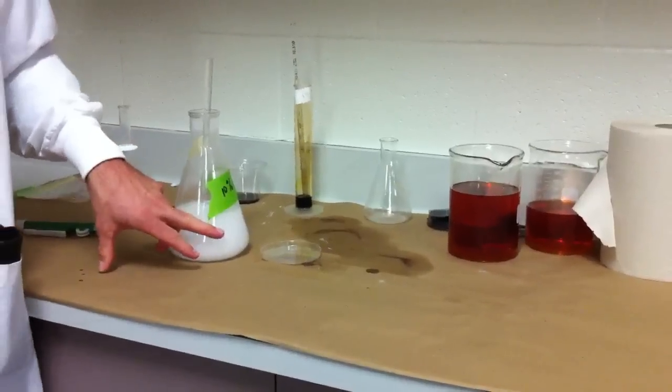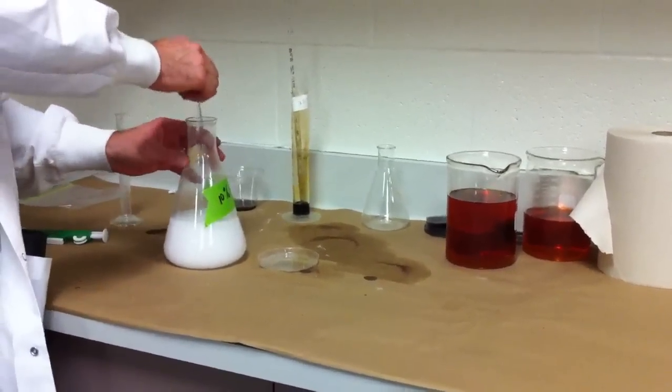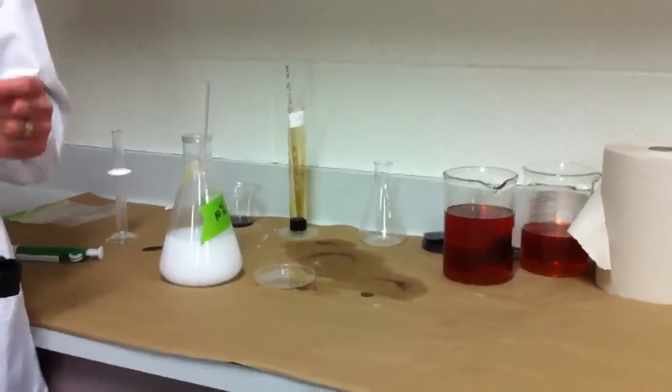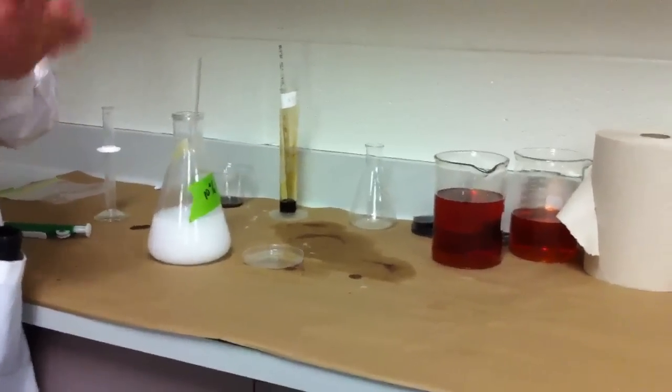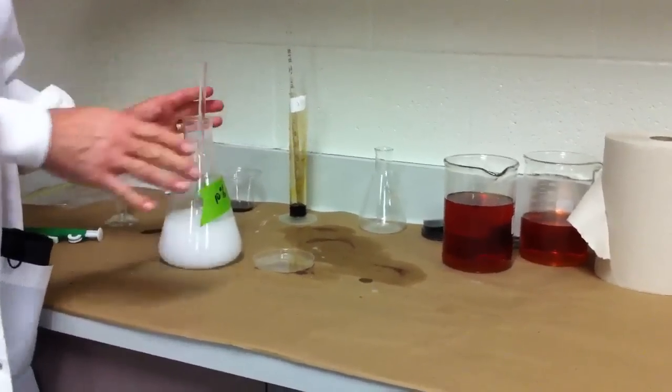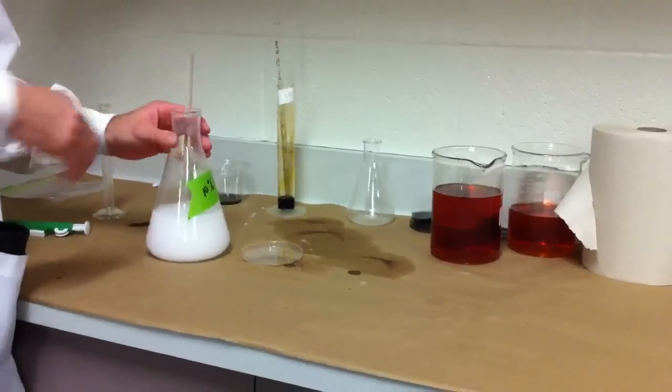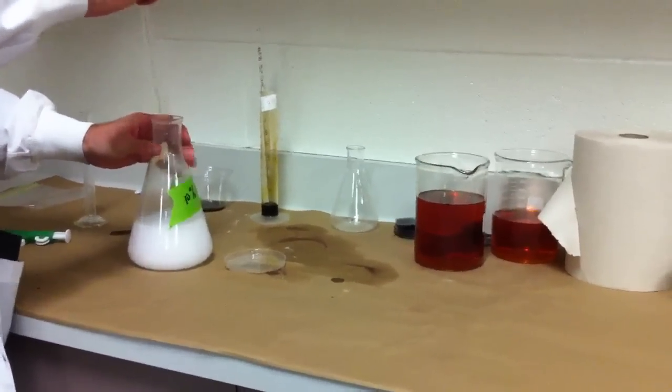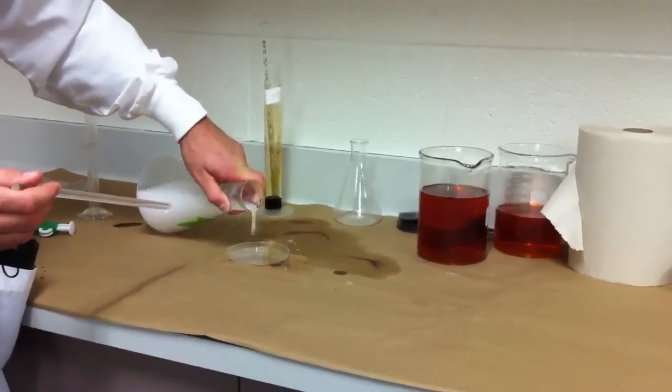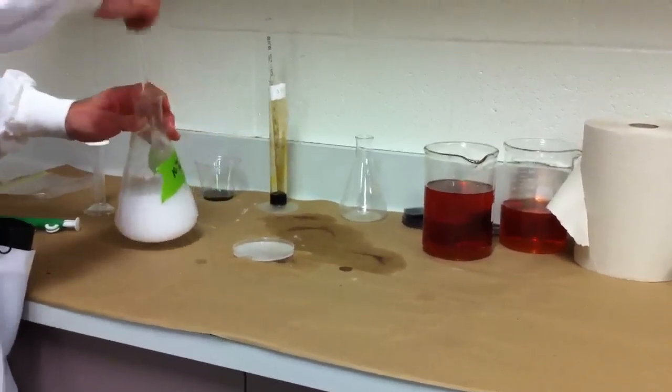All right, so I've got my starch solution. In the 10% starch solution, what I'm going to do is first show you what an indicator can do. So we're looking at just clean starch, all unadulterated. It's white, dissolved in water. I'm just going to pour a little bit of it into the petri dish.